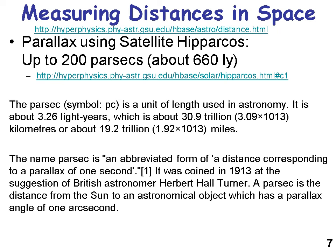The satellite Hipparcos is useful for measuring up to about 660 light years. A parsec is an abbreviated form of a distance corresponding to a parallax of one second, coined in 1913 at the suggestion of British astronomer Herbert Hall Turner. Specifically, a parsec is the distance from the Sun to an astronomical object which has a parallax angle of one arc second.